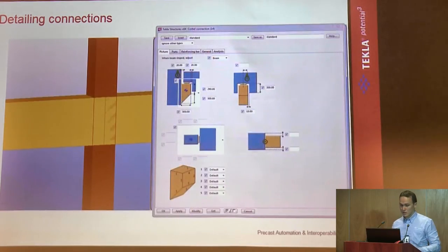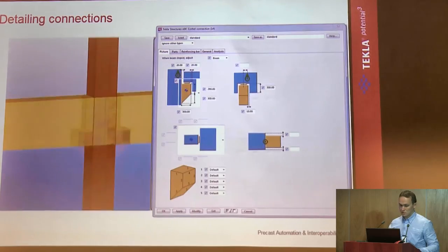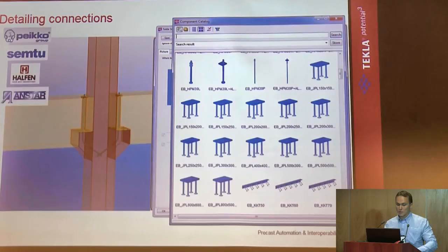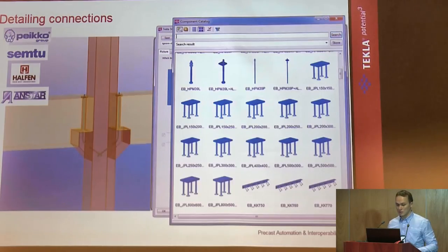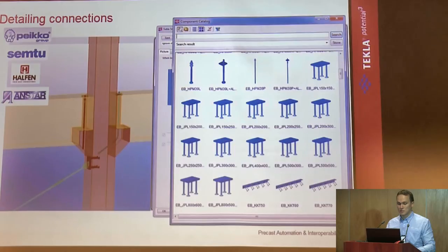We have different components from the library — ready to use, with quite many standard side composites. All connections are parametrical: we put in our numbers to define how we want them, and we can save these so we don't have to re-enter parameters each time. For embeds, bigger companies like Peikko, M2, Halften, and Unistâl all have free downloads on their webpages that we can use easily in our model. If standard connections aren't enough, we can easily adjust and modify them as needed — with Tekla, we can do whatever we need.